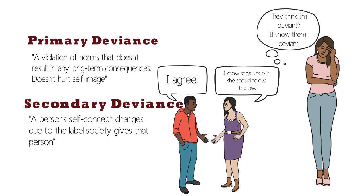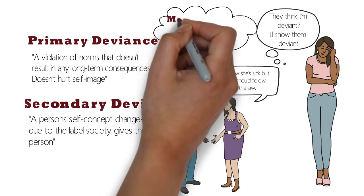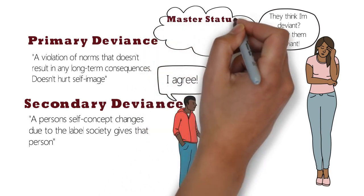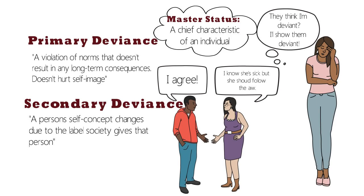When someone is labeled as deviant or a criminal, it tends to become their master status. A master status is a chief characteristic of an individual. When people are labeled a criminal, it's hard for them to change that status and it follows them everywhere. When someone has committed a felony, they are labeled a felon and must report it when they apply for a job. They can't serve on a jury or vote in many states. Therefore, the master status of felon follows them in everything they do.